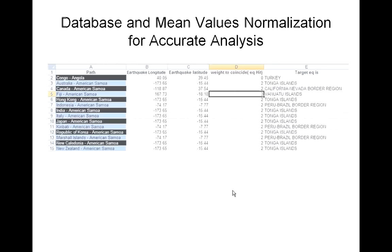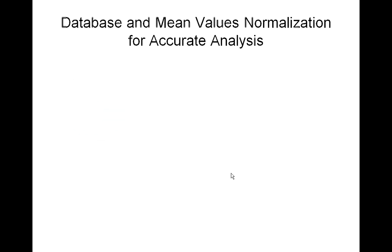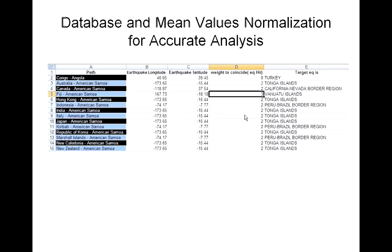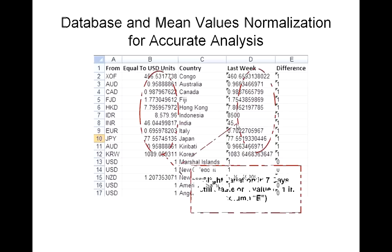This spreadsheet shows hits between 0 and 3 as explained before in terms of weight, in this case coinciding with a path. As you can see, the one on Fiji's path to American Samoa is a direct hit. The other example is on the economy of the node.